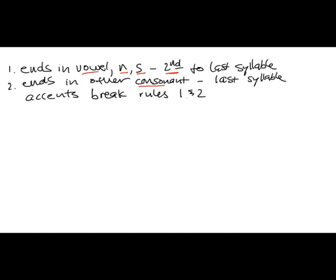Accents break rules one and two, which is to say that when Spanish grammar was written based on how people were speaking the language. The first grammar was published in 1492 by a man named Antonio Nebrija. He tried to come up with a series of rules to describe how people were using the language. He discovered that when a word ended in a vowel, N or S, most of the time the stress was on the second to last syllable. When it ended in something other than a vowel, N or S, the stress was on the last syllable. However, there were a few words that didn't fit rules one and two, so he had to come up with a way to render that in the written language. What he decided to do was put a written accent over the syllable that received the stress when it didn't fit rules one or two.